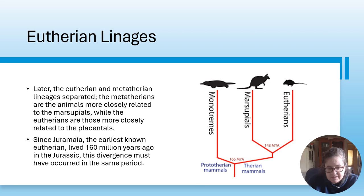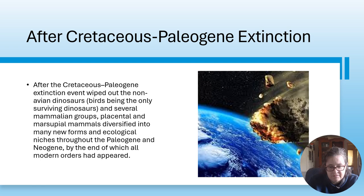The earliest known eutherian lived 160 million years ago in the Jurassic, so this divergence must have occurred somewhere in that same period. After the Cretaceous-Paleogene extinction event wiped out non-avian dinosaurs - birds being the only surviving dinosaurs - and several mammalian groups, placental and marsupial mammals diversified into many new forms and ecological niches throughout the Paleogene and Neogene, by the end of which all modern orders had appeared.